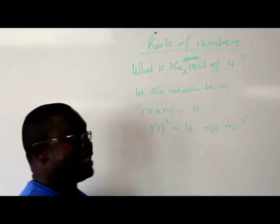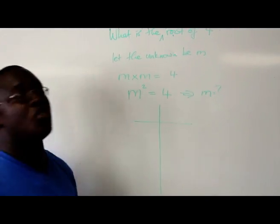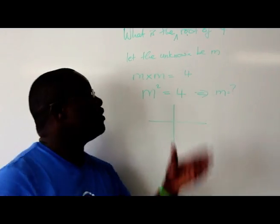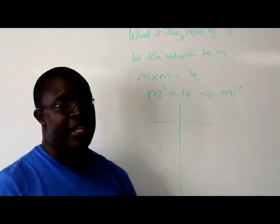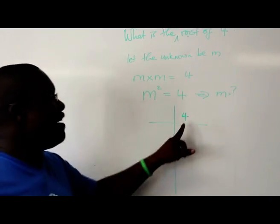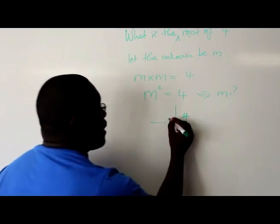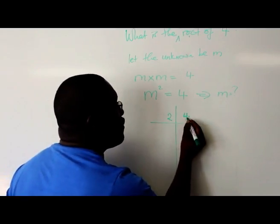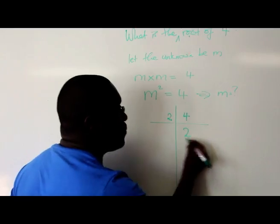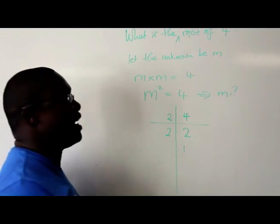What you do is use the method of prime factorization to try and find the square root of 4. What is the prime factor of 4? The first one that we know is 2. 4 divided by 2 will give us 2. 2 is a prime number, so it divides as well, and you get 1.